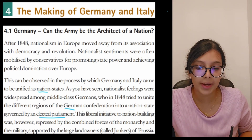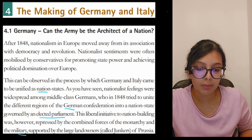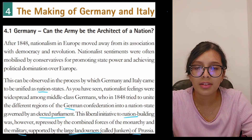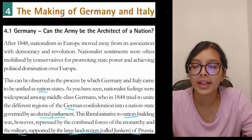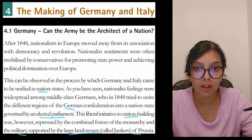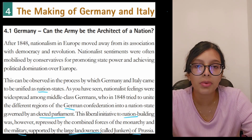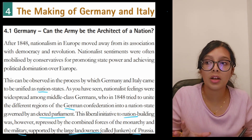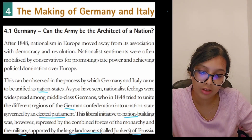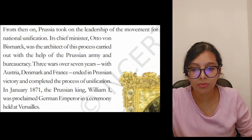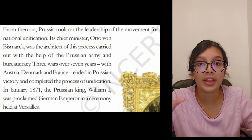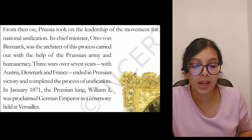This liberal initiative for nation building was repressed by the combined forces of monarchy, military, and the large landowners of Prussia — called Junkers. The kings, military, and landowners wouldn't accept equality for all people; they preferred to maintain their superiority. From then on, Prussia took on the leadership of the movement for national unification.